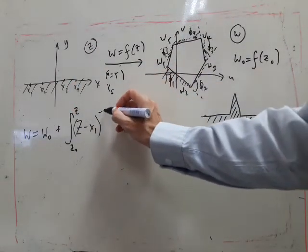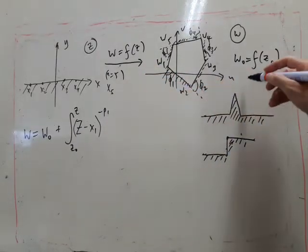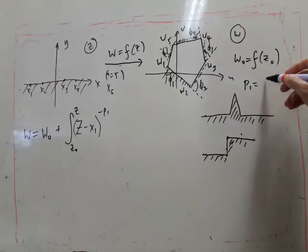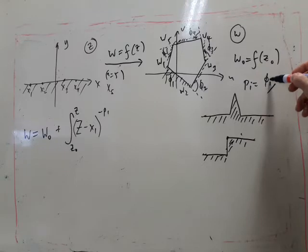So and then this is raised to the power p_1, and p_1 is equal to phi_1—sorry, p_i in general is equal to phi_i divided by pi. So the phi_i are called the exterior angles of the polygon.